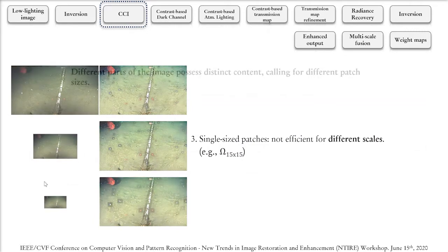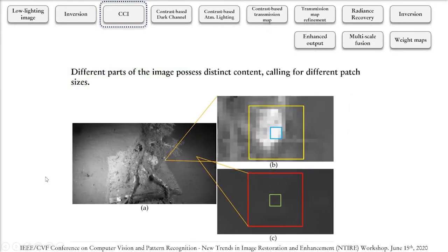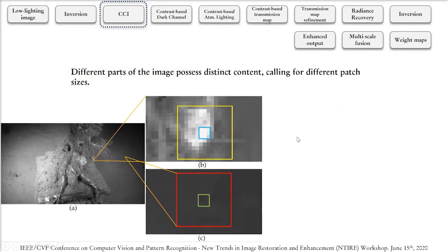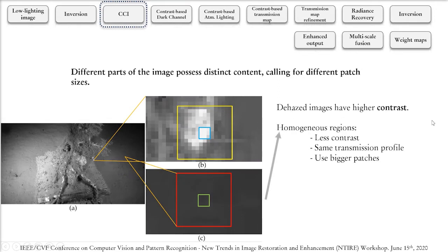Therefore, we need different patch sizes for different regions of the image. We note that for the haze images we also have higher contrast, so contrast can be used as a guiding parameter for the size of the patches.